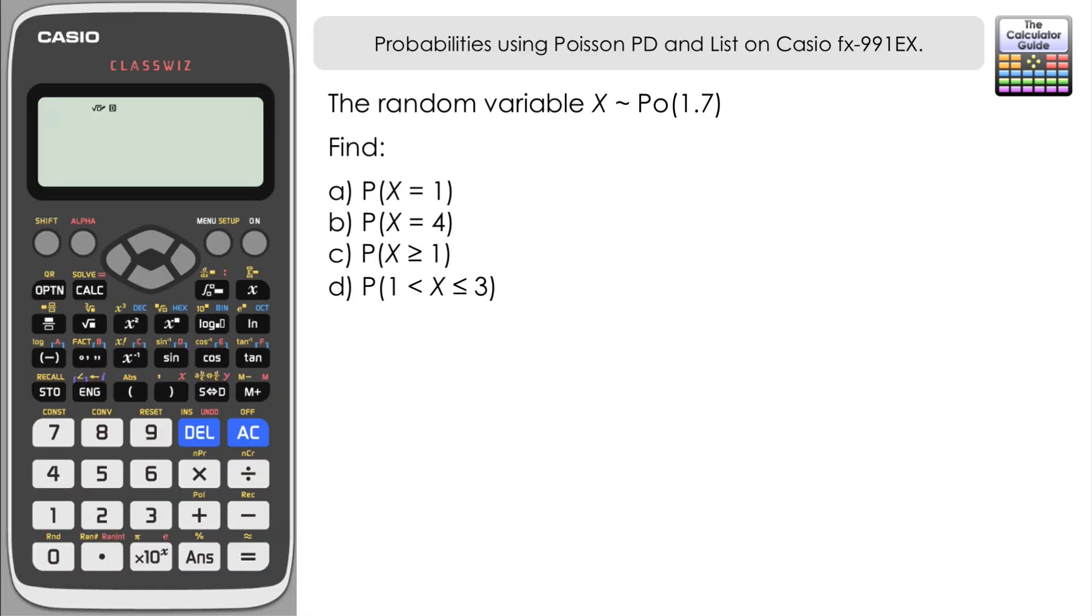In this video we have a random variable X distributed with the Poisson distribution with a lambda value of 1.7. We've got four things to find: the probability X equals 1, probability X equals 4, probability X is greater than or equal to 1, and finally the probability that X is greater than 1 but less than or equal to 3.